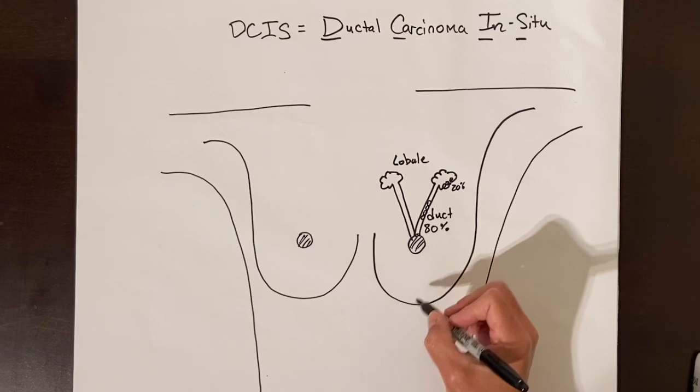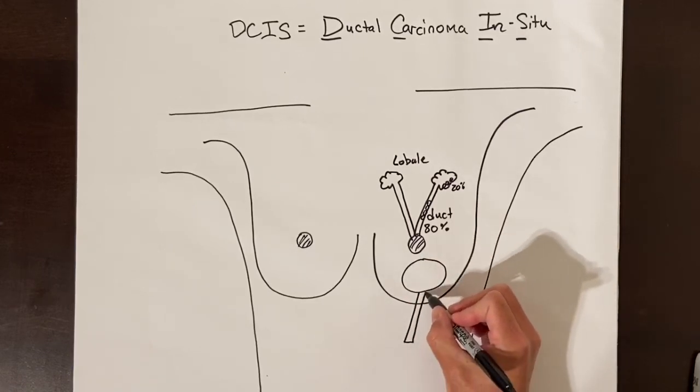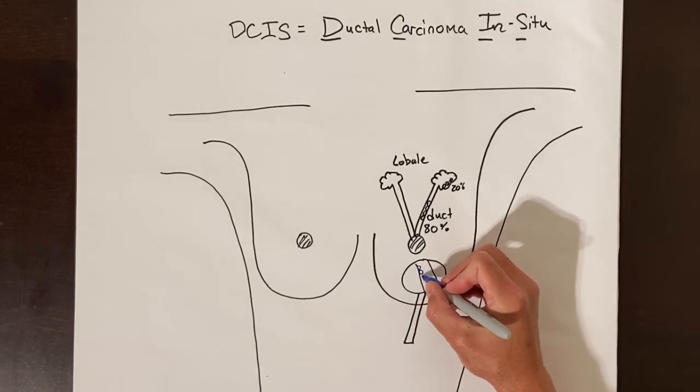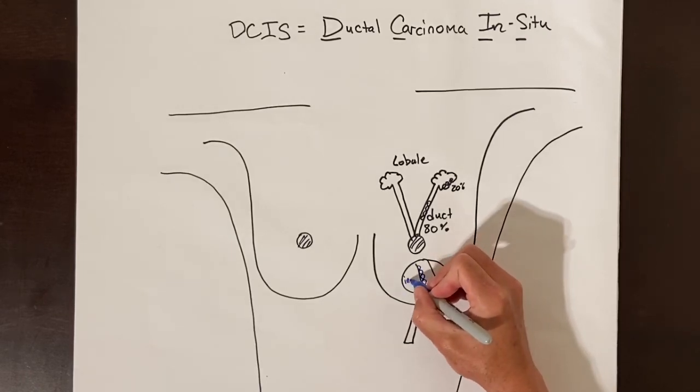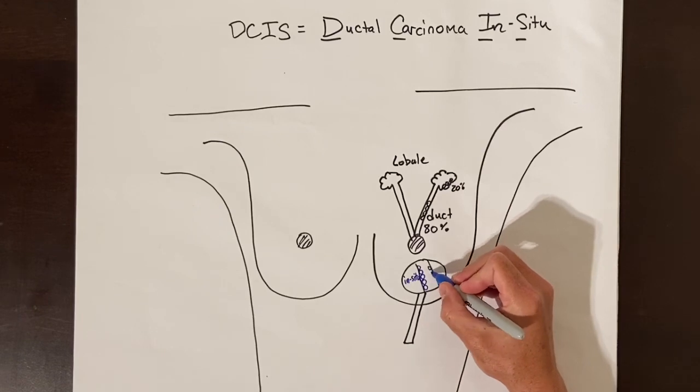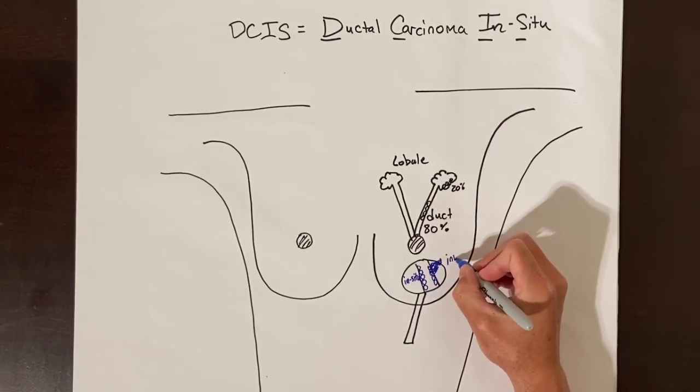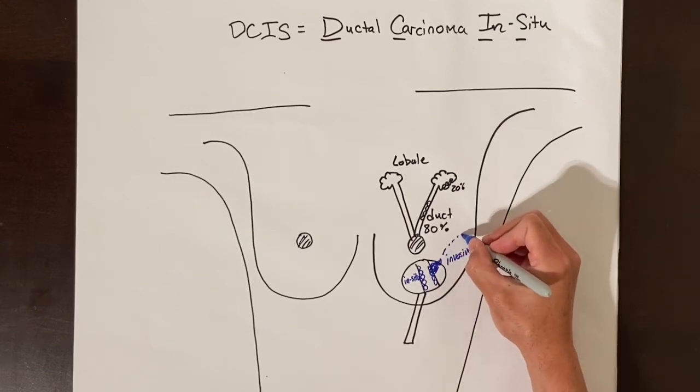Let's magnify one of these ducts. As the duct cells become cancerous, they are stuck inside of the duct tube, and when they have not invaded through the wall of the duct, they are called in situ. Only after the cancerous cells have invaded through the wall of the duct and into the surrounding breast tissue are they considered invasive breast cancer.